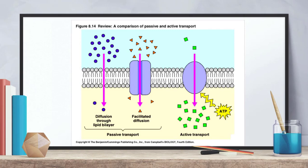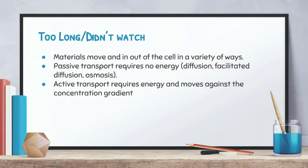Here's a quick review: Passive transport — regular diffusion does not require a protein, goes from high to low concentration, crosses the cell membrane without any energy. Facilitated diffusion also goes from high to low concentration with no energy, but requires a channel protein because the molecules are large or polar. Active transport goes from low to high concentration, requires a protein, and also requires energy because it goes against the concentration gradient. Passive transport includes diffusion, facilitated diffusion, and osmosis; active transport requires energy.